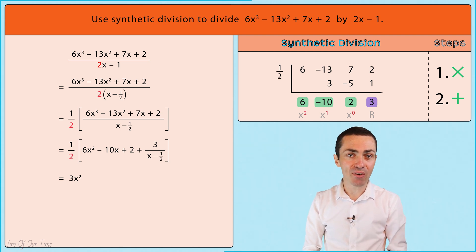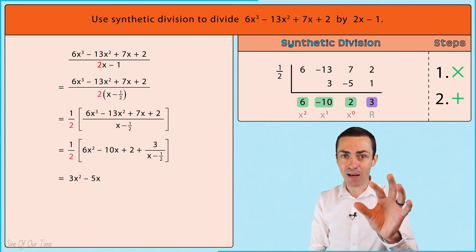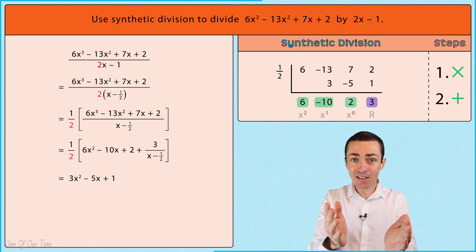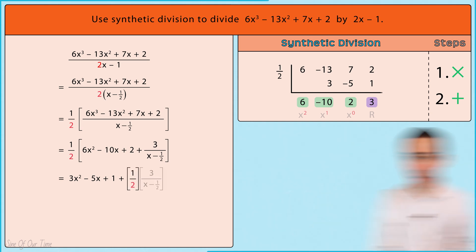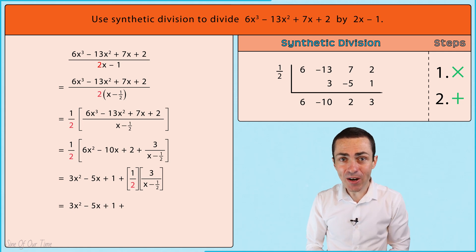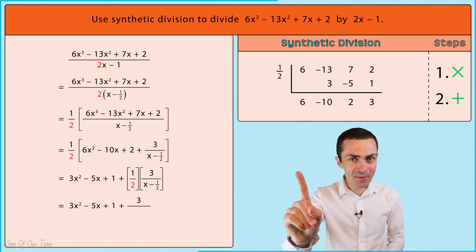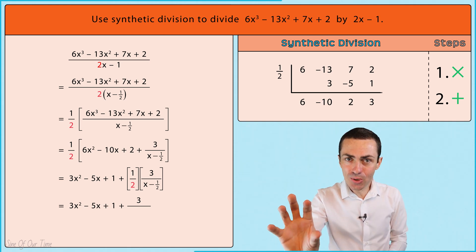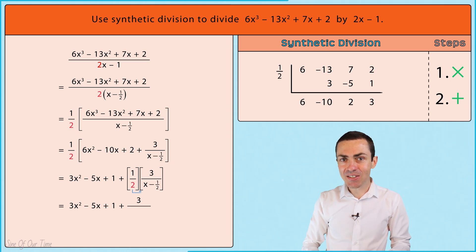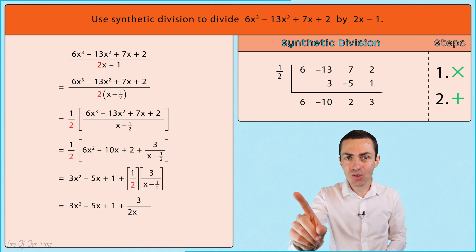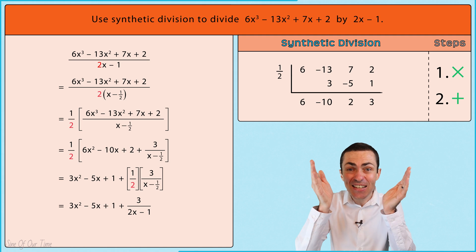We take one-half and multiply by negative 10x to give us negative 5x. Then one-half multiplied by 2 gives us 1. Finally, one-half multiplied by the remainder three over (x minus one-half): the numerator 3 stays unchanged, but the denominator two multiplied by (x minus one-half) gives 2x minus 1 — which is exactly the form of the denominator given in the original question.